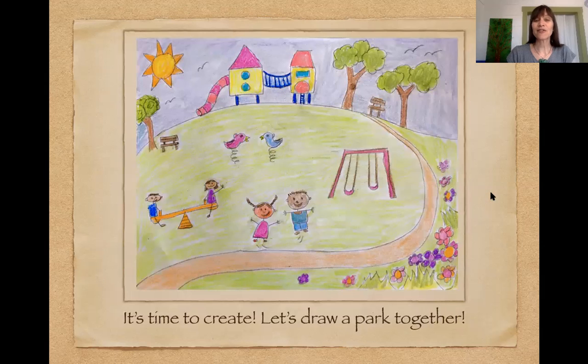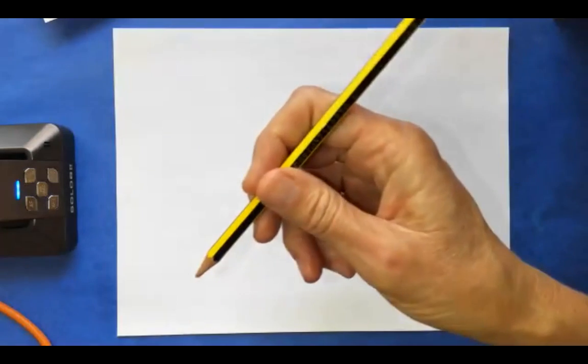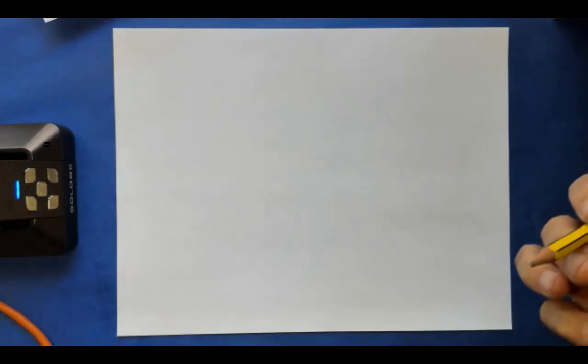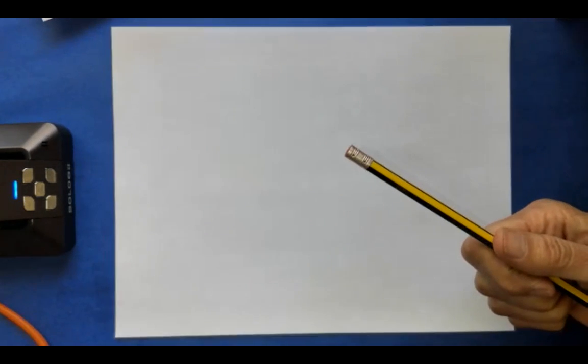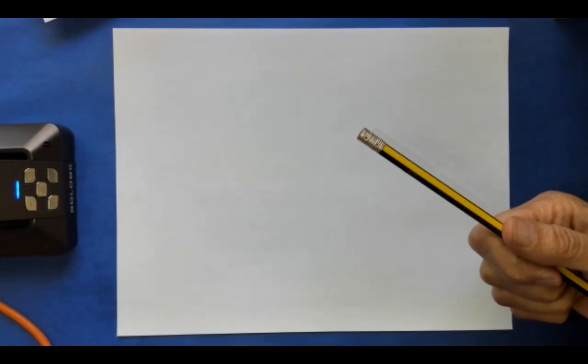It is time to create. Let's draw a park together. All right, here's our paper. We are ready to roll. All you're going to need for your drawing is a pencil and a piece of paper. If you don't have a pencil, you could use a marker or a crayon. Whatever you have at home.